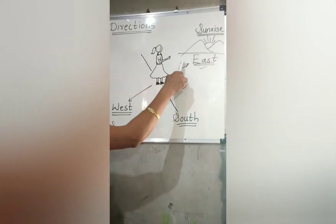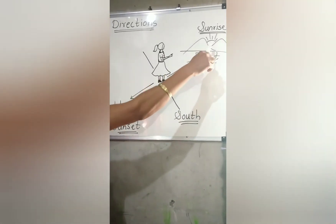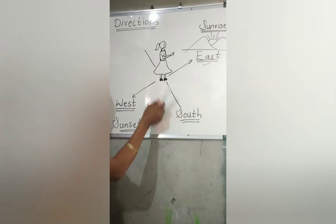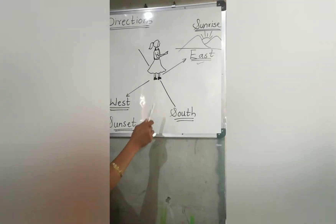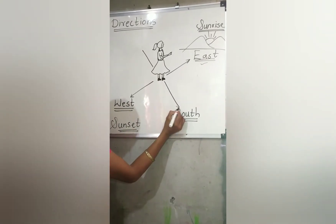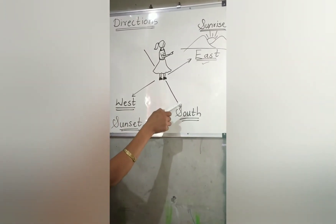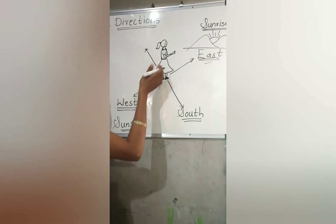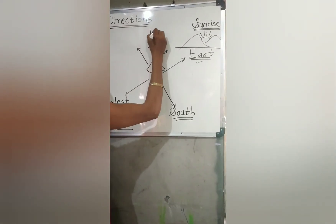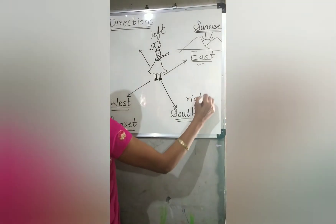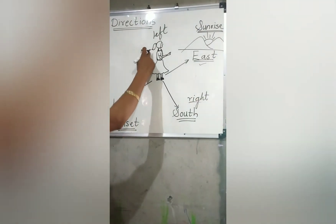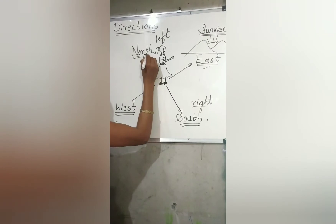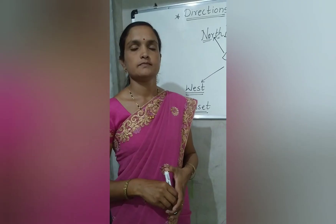When you are standing facing towards the East direction, your right side shows South direction. And exactly opposite to South — at your left side — is the direction North. So your right side is South direction and your left side is North direction.